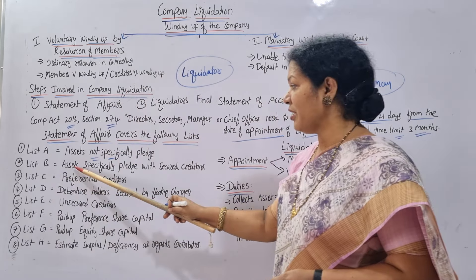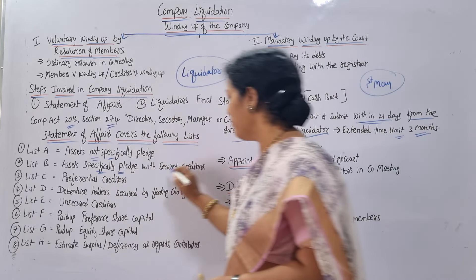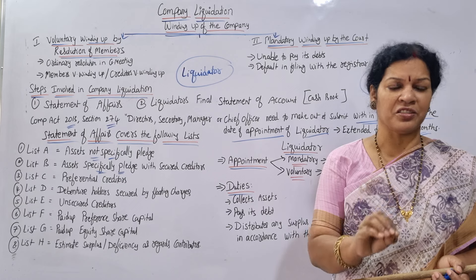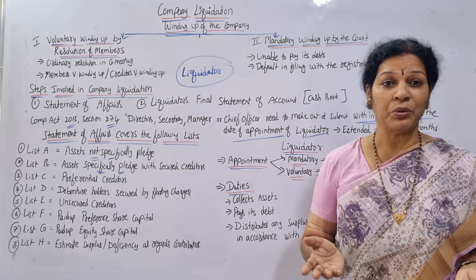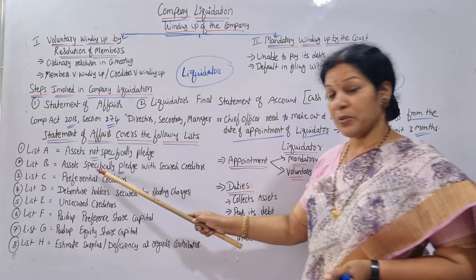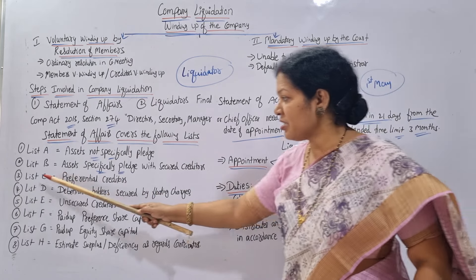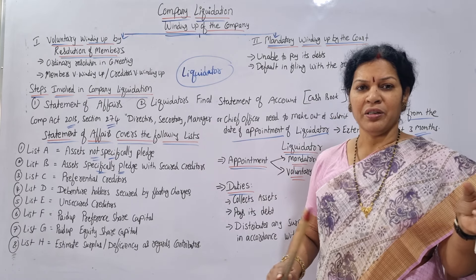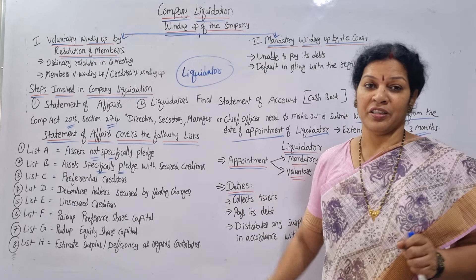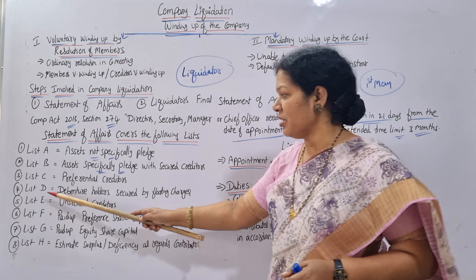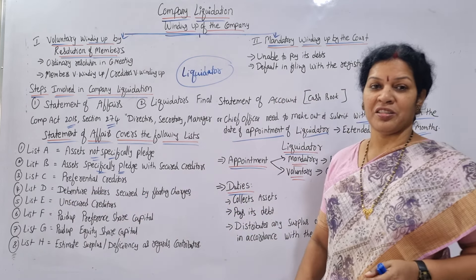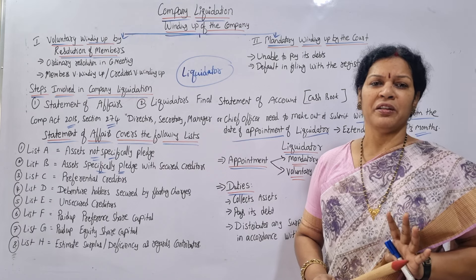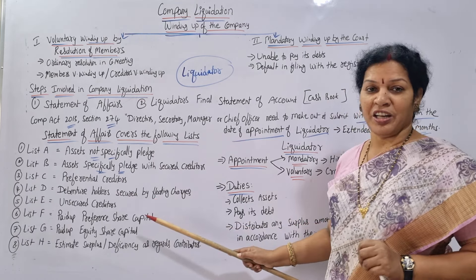List B covers assets specifically pledged with secured creditors. Some creditors say that unless you provide pledged assets, they will not contribute to the organization — so those assets are discussed in List B. List C covers preferential creditors. During the liquidation period, preference in payment is given to these preferential creditors, which is why they are called preferential creditors. List D covers debenture holders secured by floating charges. Debenture holders are always secured, and payment must be made to them — these are secured with floating charges.